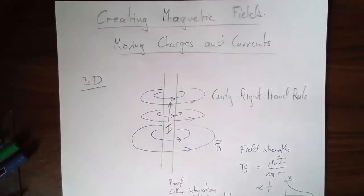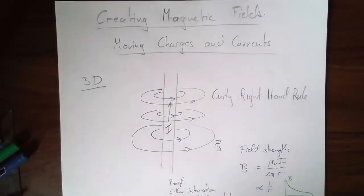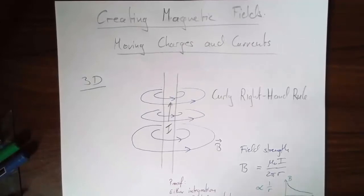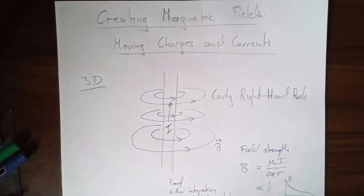This is going to be part 3 of the magnetism overview, and in this part I'm going to talk about how moving charges or currents create magnetic fields. I'm not going to do any explicit examples in this video to keep it short. I'm going to do examples elsewhere. You'll probably want to look at some examples, especially after being exposed to the Biot-Savart rule, because it's rather complicated looking when you first meet it, and it helps to actually work through a couple of examples.